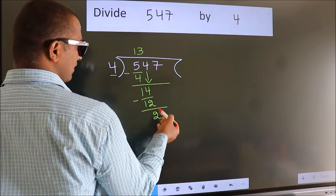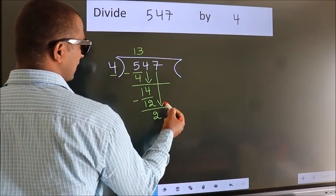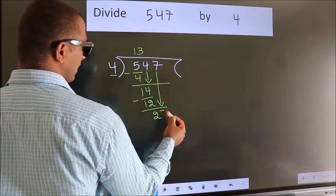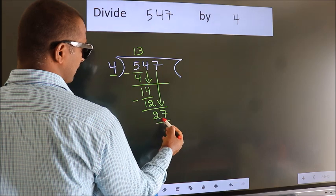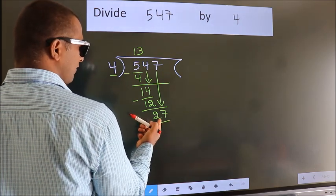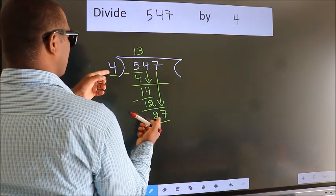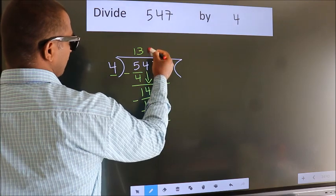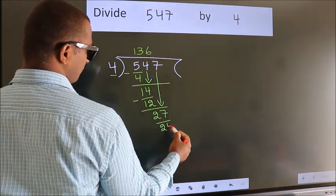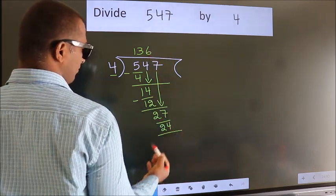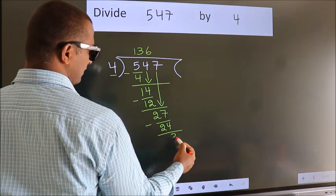After this, bring down the beside number. So, 7 down. So, 27. A number close to 27 in 4 table is 4 6 24. Now, we subtract. We get 3.